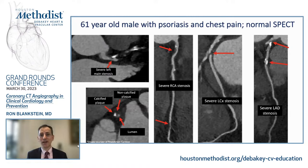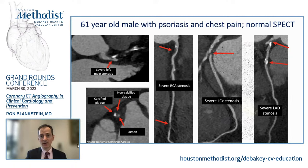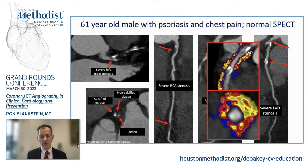Here's another case — a 61-year-old male with psoriasis, a well-known risk factor for coronary disease. He presented with chest pain, underwent SPECT perfusion imaging which was normal, but kept having pain. His cardiologist astutely ordered a coronary CTA, which identified essentially severe three-vessel disease including left main stenosis and severe stenosis in the LAD, circumflex, and RCA. Interestingly, using a technique known as fat attenuation index — where we look at fat around the coronary arteries to infer inflammation — we saw a very abnormal signal, placing him above the 90th percentile for level of inflammation. This was done for research purposes, not clinical use yet.